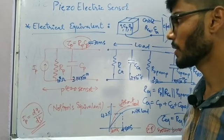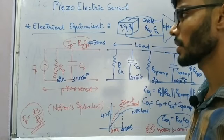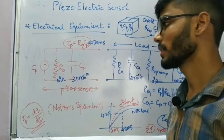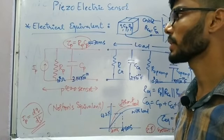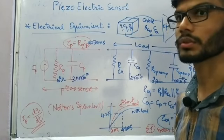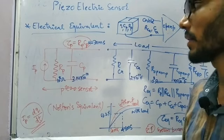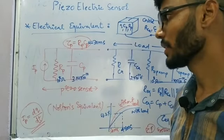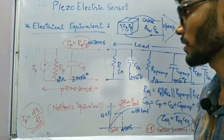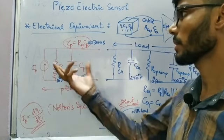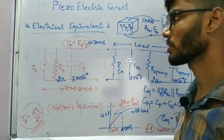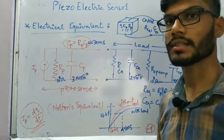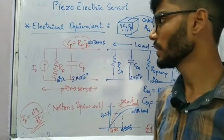The sensor has resistance RP and capacitance CP. Without any load, the ideal time constant of the sensor is τP = RP × CP. Taking example values RP = 10⁸ Ω and CP = 3.14×10⁻¹⁰ F, the approximate ideal time constant is about 30 milliseconds.